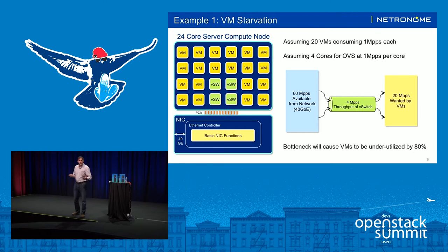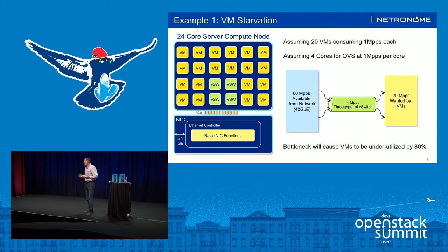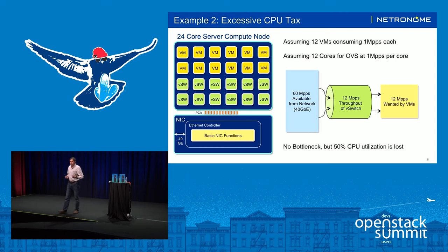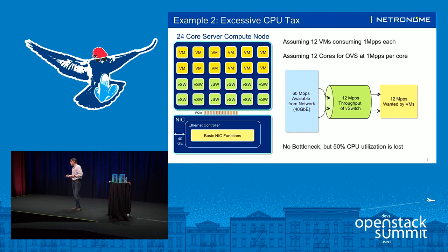To illustrate this in more detail: with a typical server-based networking data path running on four CPU cores, you get about 4 million packets per second. In a typical 24-core modern server CPU, you have 20 cores available for VMs. At a VM workload of 1 million packets per second — which is not unusual — those VMs would be asking for 20 million packets per second, yet the data path can only deliver 4 million. So you have a bottleneck and your applications are running in a starving state. You can try to solve this by adding more cores — 12 cores delivering 12 million packets per second to 12 VMs — but you've just taken up half your server CPU for networking, not applications. That's not good utilization of your cloud infrastructure resources.